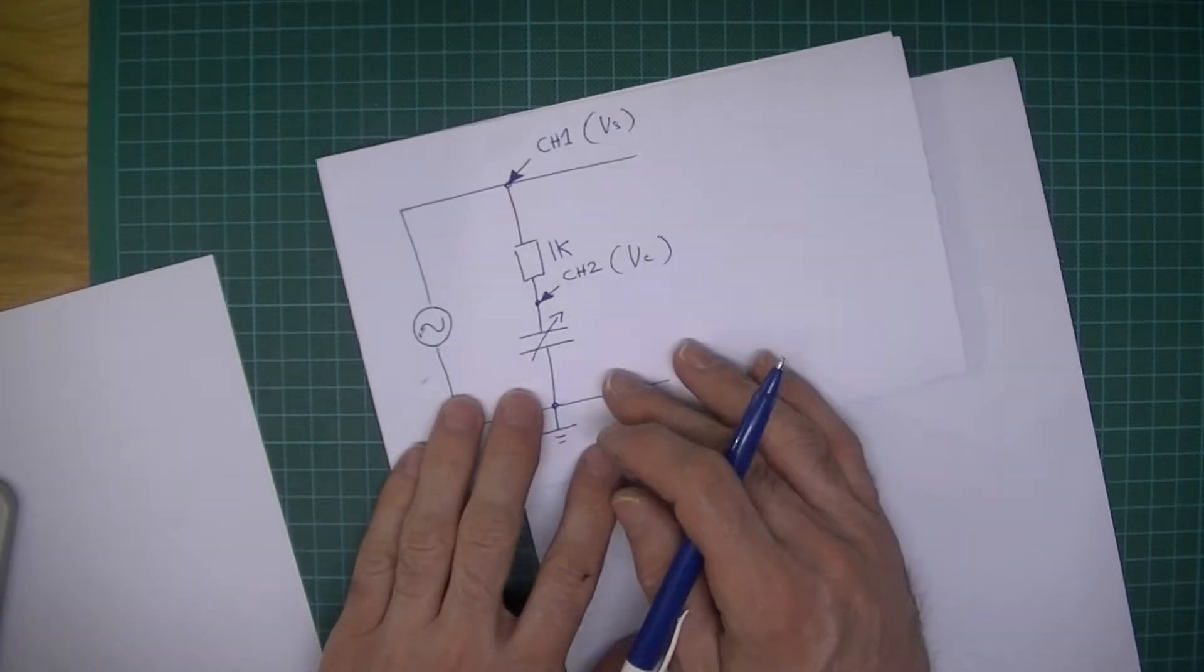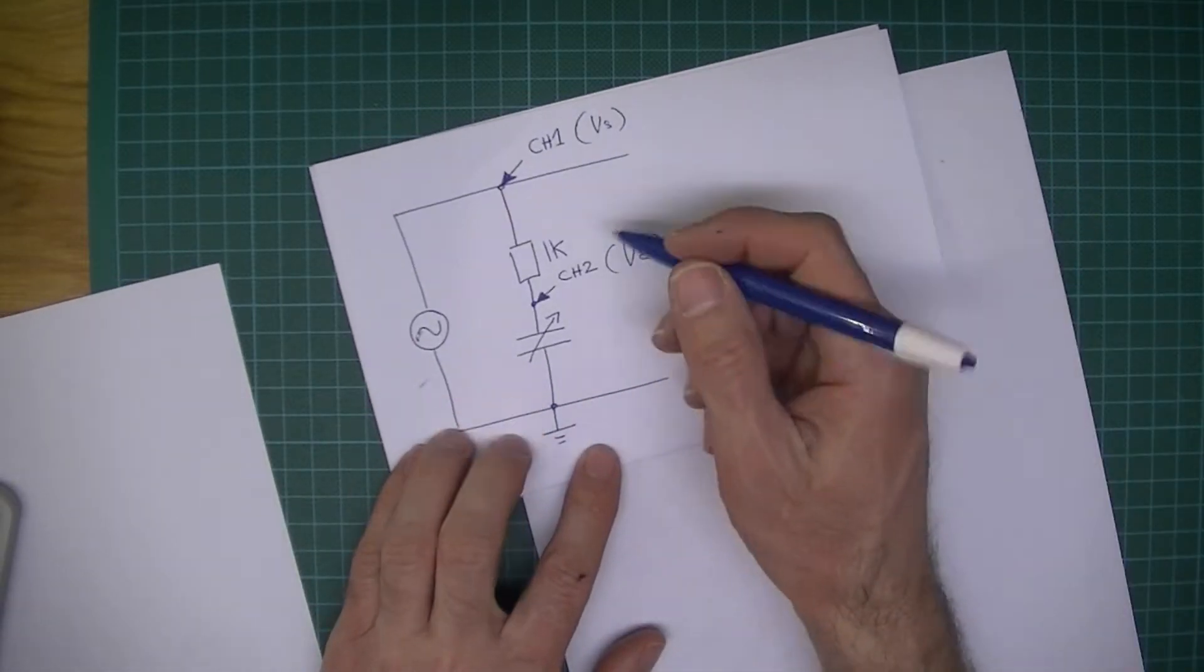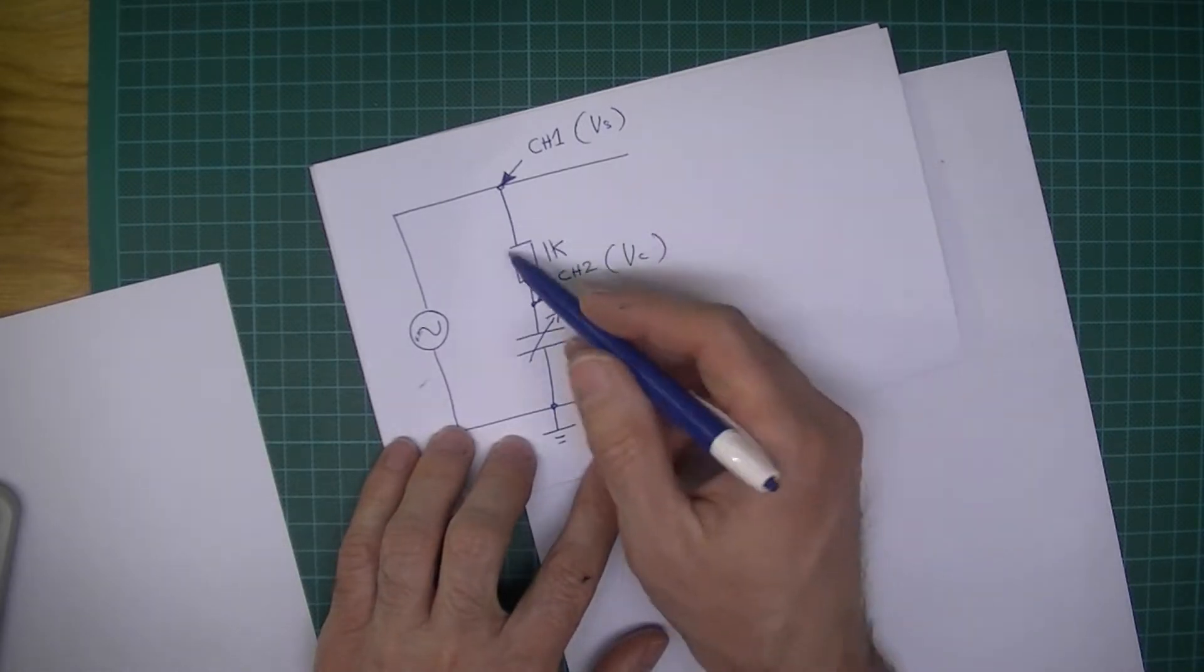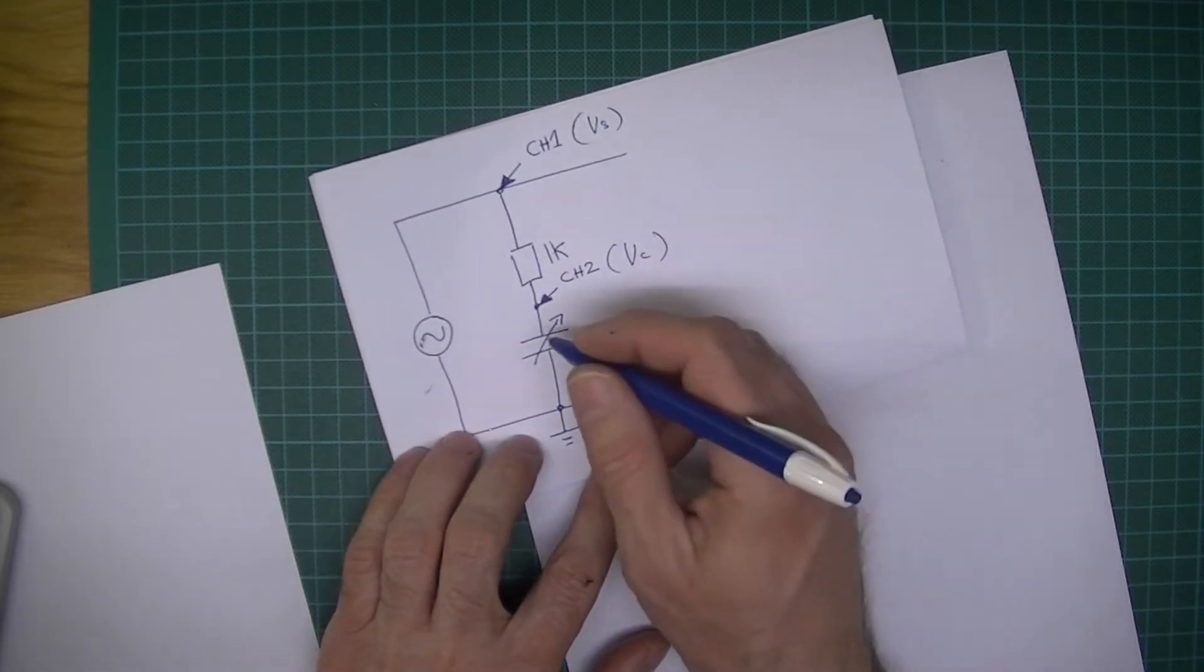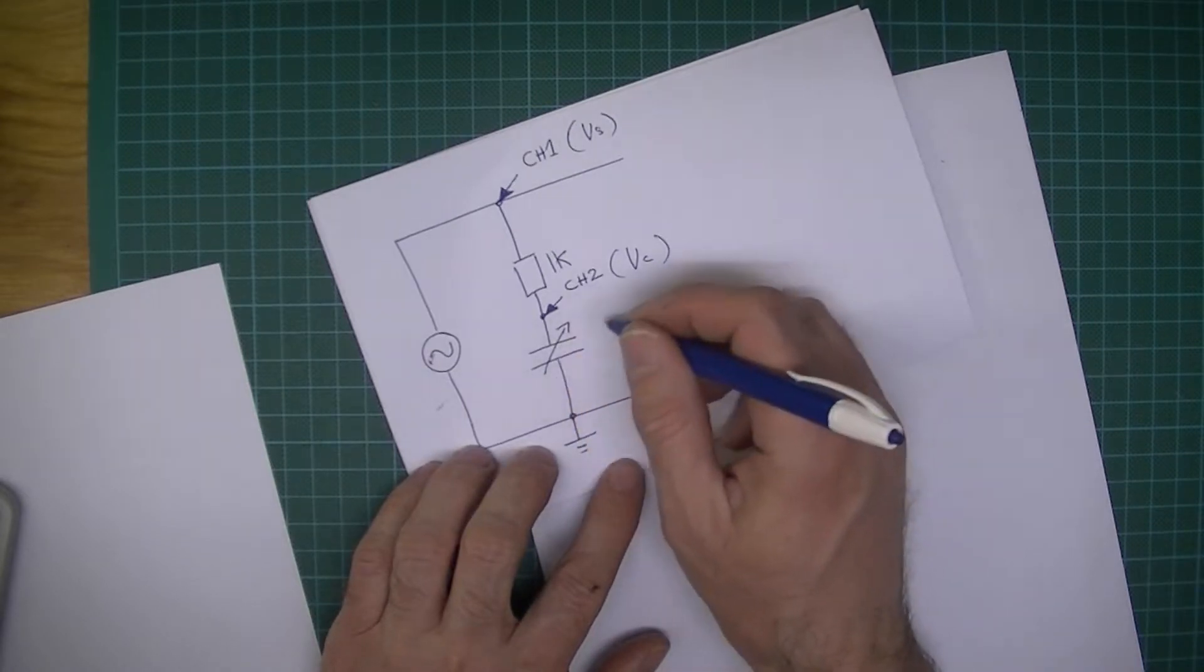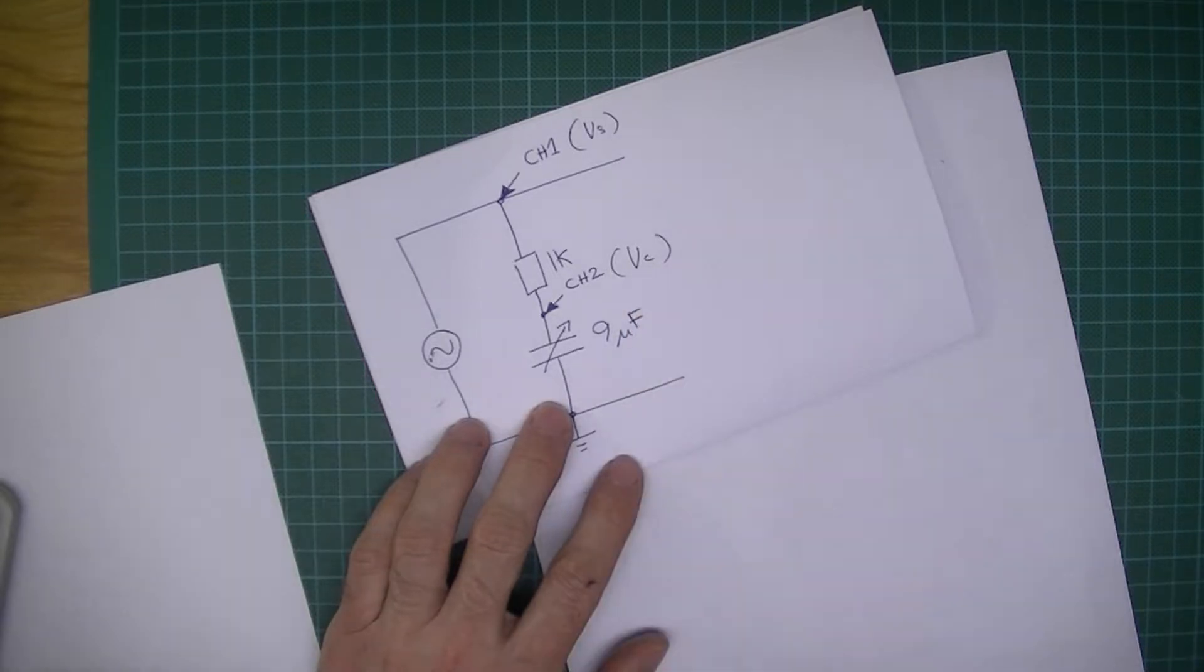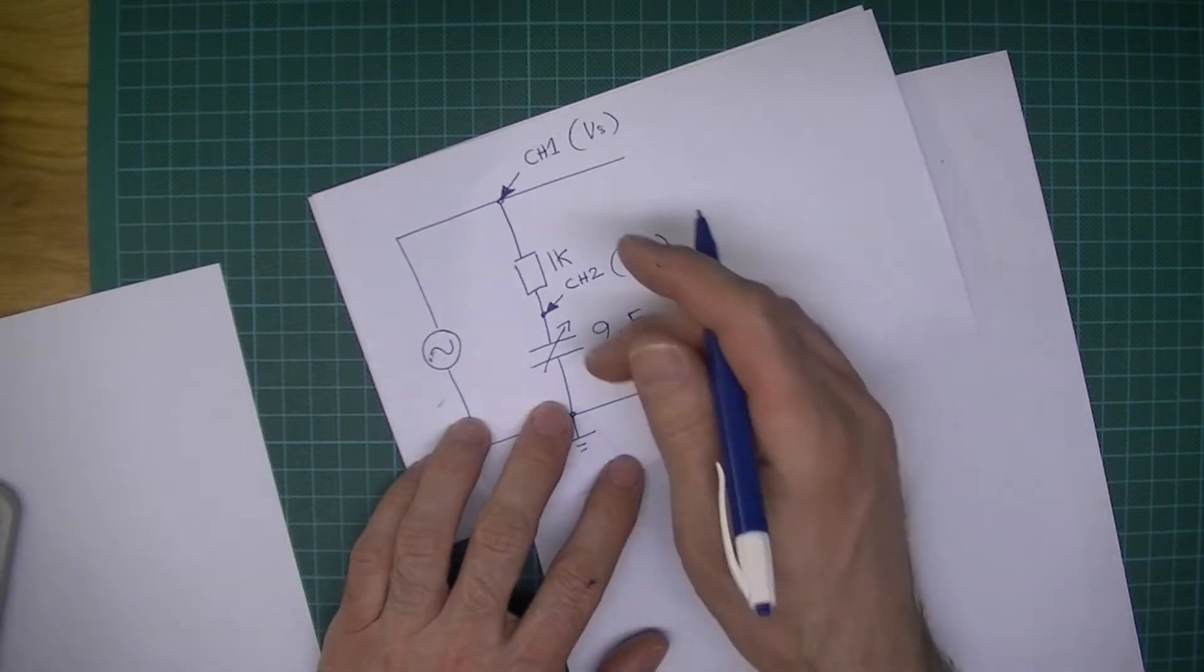So in the video I took just a moment ago, I showed the oscilloscope screen. We had a fixed value resistor and a variable capacitor, and I found that when I increased the value of this capacitance to 9 microfarads, I had a phase angle.